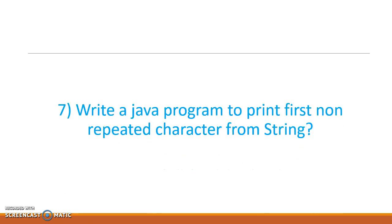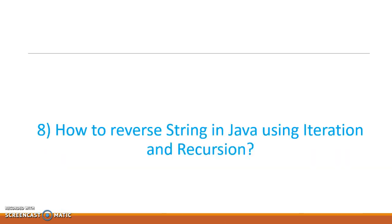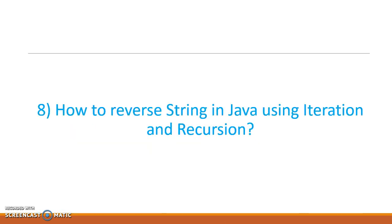Seventh, write a Java program to print the first non-repeated character from a string. For example, if the string is 'sandeep', the first non-repeated character is 's', so the output should be 's'. Eighth, how to reverse a string in Java using iteration and recursion — we can reverse a string using the String API or StringBuilder API, but without using any API, we need to do it using iteration and recursion.